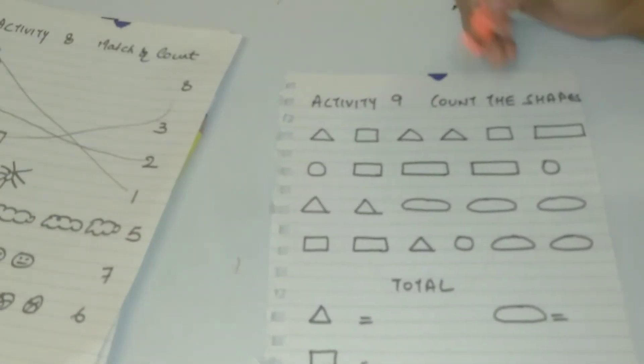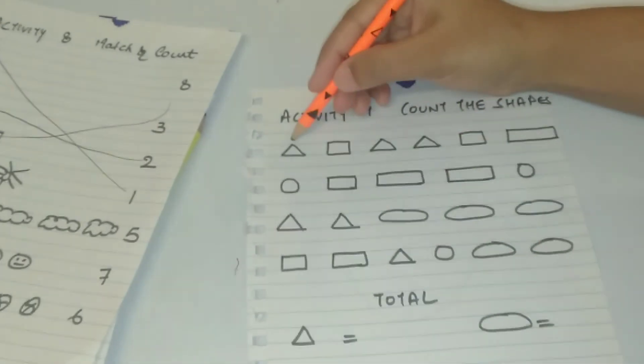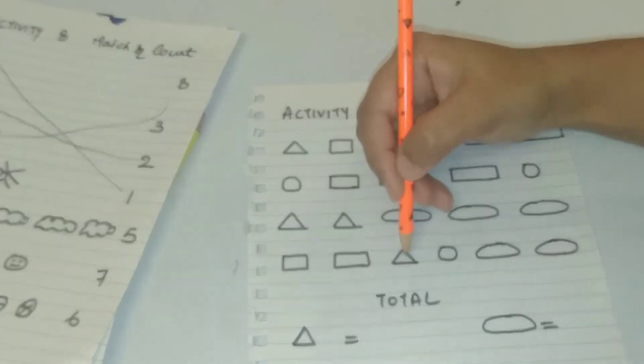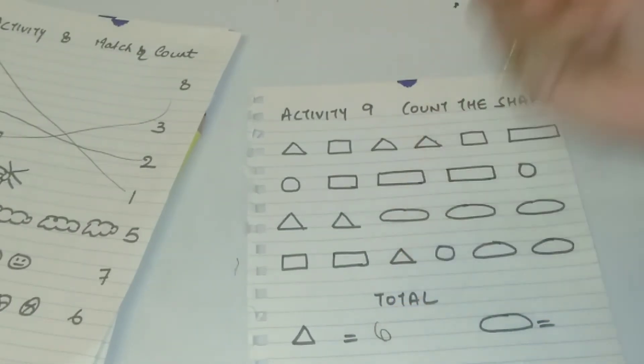The next is count the shapes. Draw different shapes and just ask your child to count the shapes and write it in the answer. So these small activities are very good for the kids.